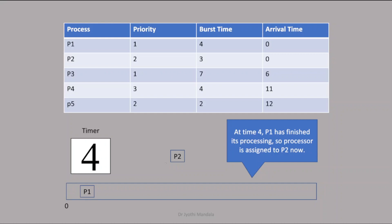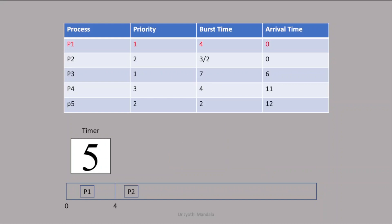P1 has completed its execution and P2 has got the chance. P2 has executed for 1 second — P2 requires 3 seconds out of which 1 second is executed. We are at timer 5. No process is arriving at the 5th second, so we continue with P2. At the 6th second, 2 seconds of P2 are executed and 1 second is still required. At the 6th second, a new process P3 has arrived.